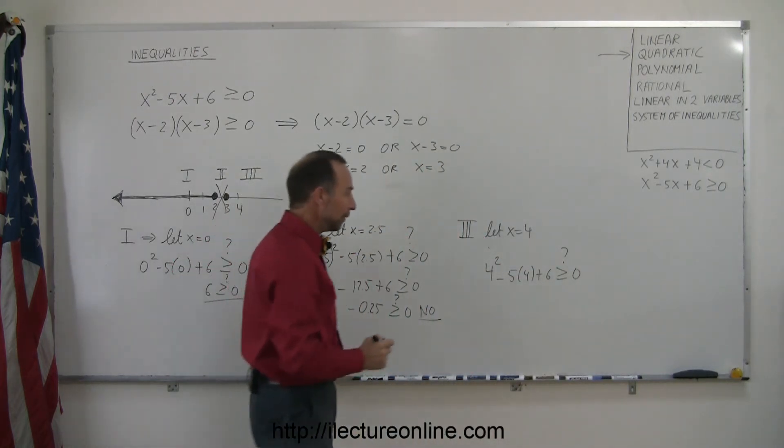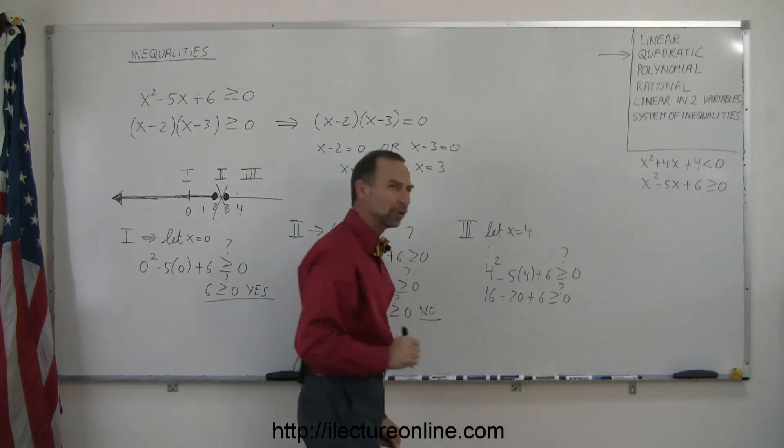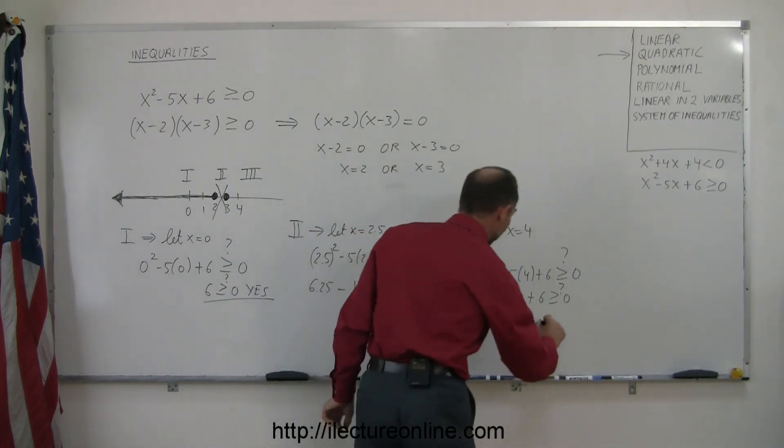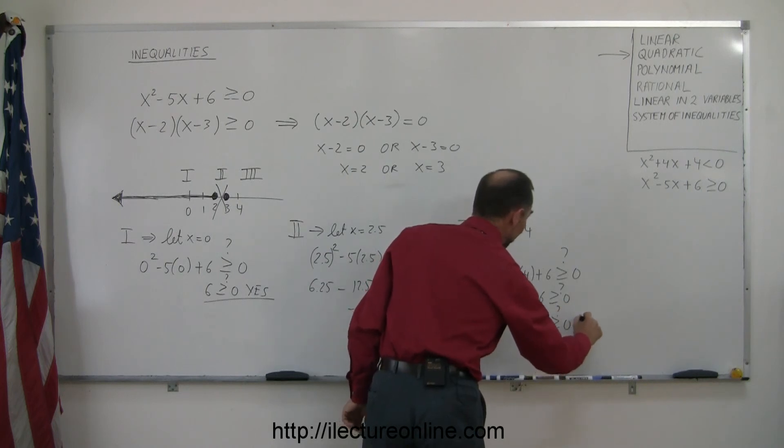Let's work it out. 16 - 20 + 6 ≥ 0? Question mark. 16 + 6 is 22. Minus 20 is 2. And it looks like 2 is greater than 0. The answer is yes.